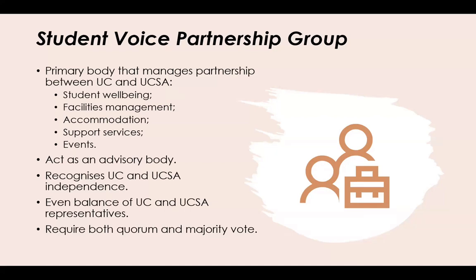The group acts as an advisory body for university policy development that has direct impact on students, and it is a place for both UC and UCSA to escalate issues that don't fit within other student representative structures. It informs, advises, and makes recommendations to the Vice Chancellor or UC senior leadership team. There is an even balance of UC and UCSA representatives, and it requires both quorum and majority vote when making decisions regarding the use of campus enhancement funds.